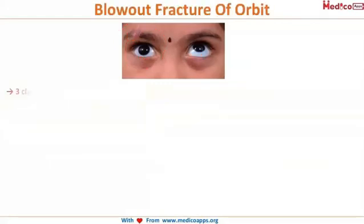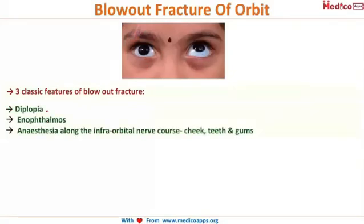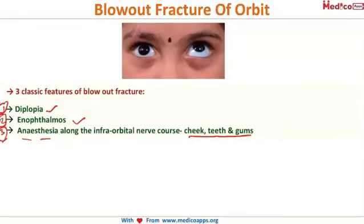There are three classical features of blowout fracture to remember for your exam: diplopia, enophthalmos, and anesthesia along the course of the infraorbital nerve — the patient cannot feel anything along the cheek, teeth, and gums. So diplopia, enophthalmos, and anesthesia along the infraorbital nerve course in the cheek, teeth, and gums are the classical features of blowout fracture.